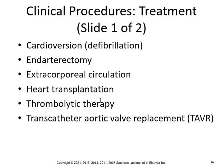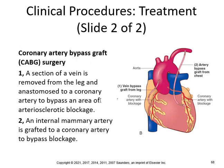Procedures also include extracorporeal circulation, heart transplantation, thrombolytic therapy, transcatheter aortic valve replacement (TAVR), and coronary artery bypass graft (CABG). In CABG, a section of vein — usually the saphenous vein from the leg — is removed and anastomosed to a coronary artery to bypass arteriosclerotic blockage. An internal mammary artery can also be grafted to a coronary artery to bypass the blockage.